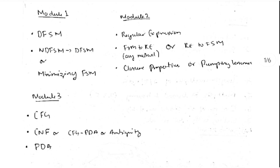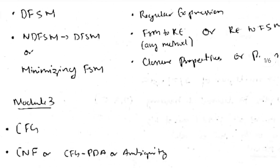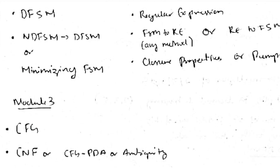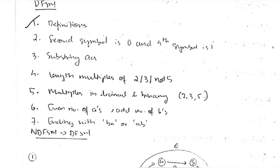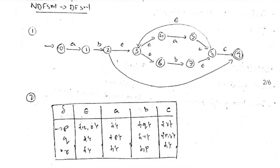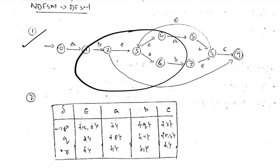Now let's look at the important questions for Module 1: DFSM. Study DFSM compulsory. If you know how to solve DFSM, you have the option of DFSM-to-DFSM conversion or minimizing FSM — those might come as an 'or.' In DFSM, first learn the definitions: what is an alphabet, power of an alphabet. I have written the important definitions in the reference video. The NDFSM-to-DFSM conversion is one of the most repeated topics.